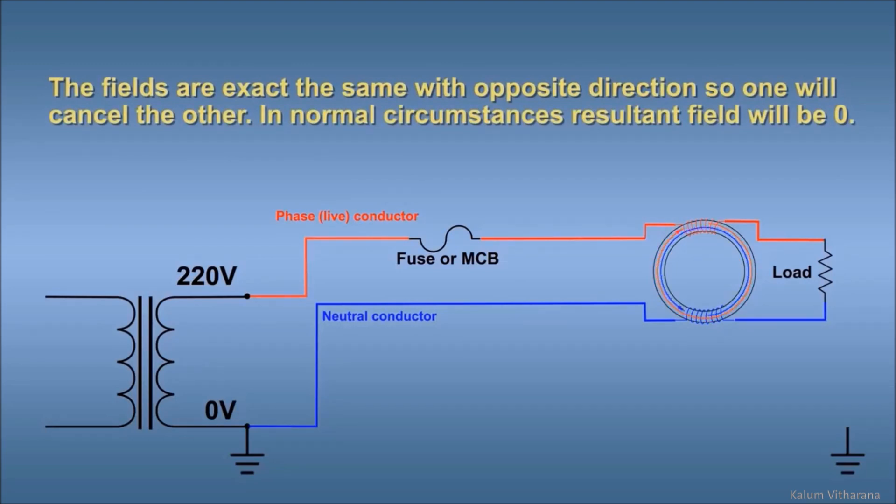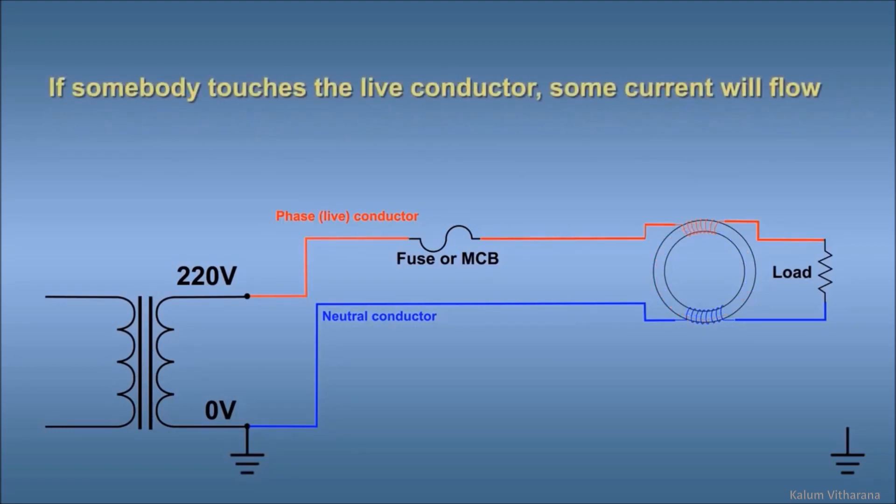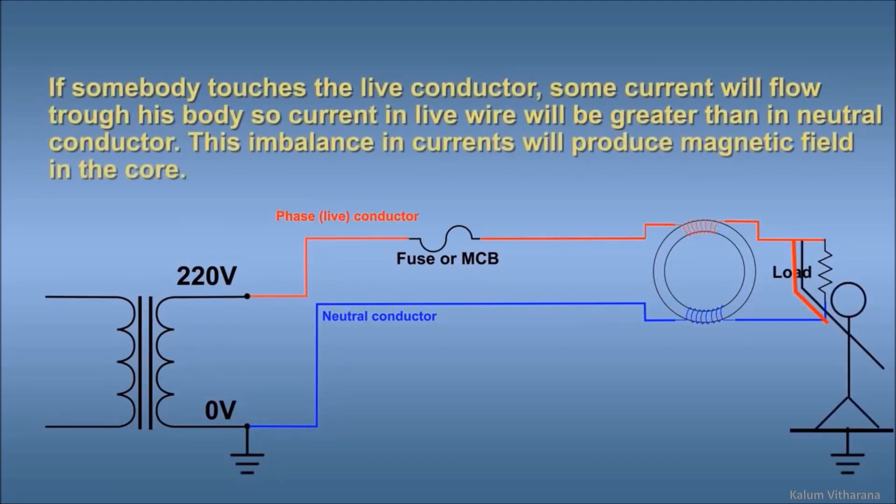The magnetic fields are exactly the same with opposite directions, so one will cancel the other. In normal circumstances, the resultant field will be zero. If somebody touches the live conductor, some current will flow through their body, so the current in the live wire will be greater than in the neutral conductor. This imbalance in currents will produce a magnetic field in the core.